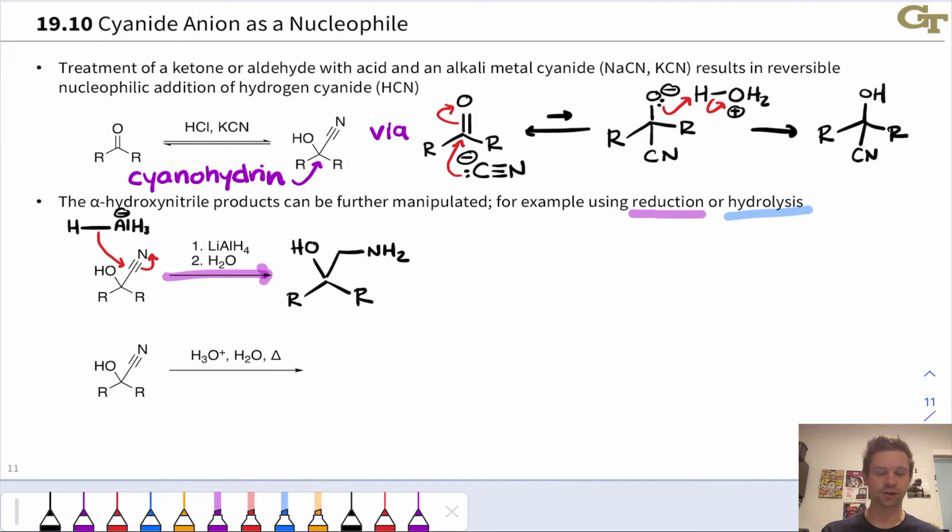This is a way to generate 1,2-amino alcohols where the alcohol, the hydroxy group, comes from the carbonyl group and the amino group comes from cyanide, essentially, in the addition of cyanide step.